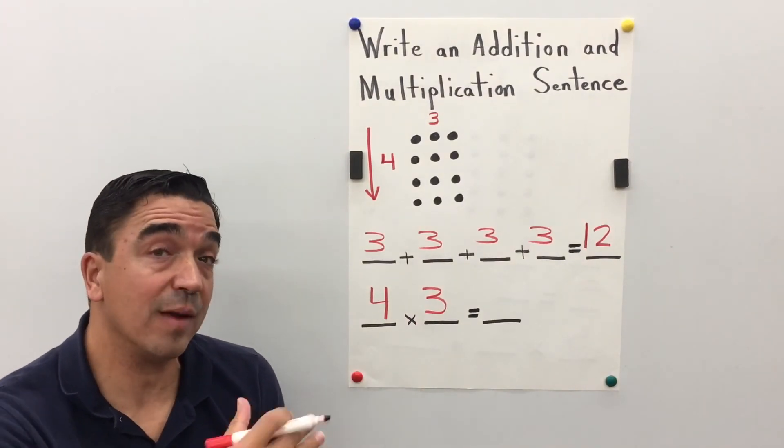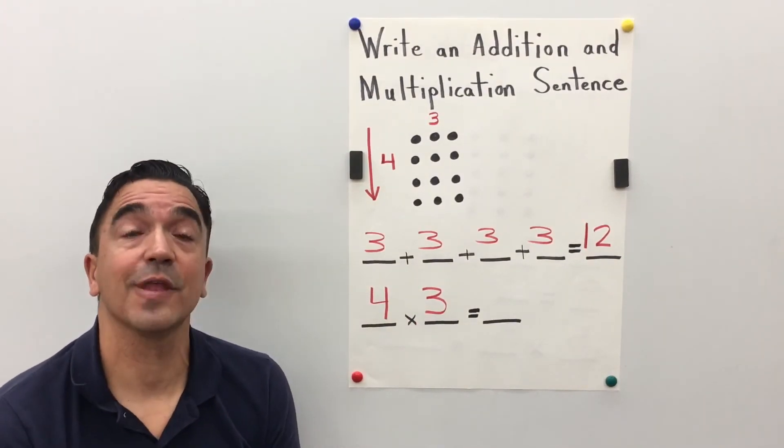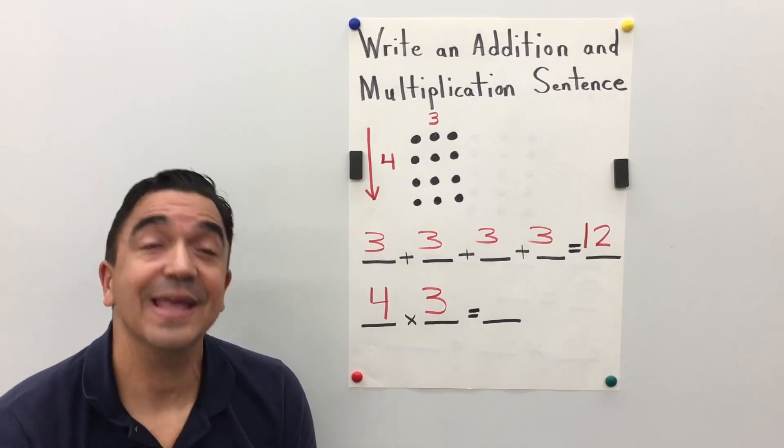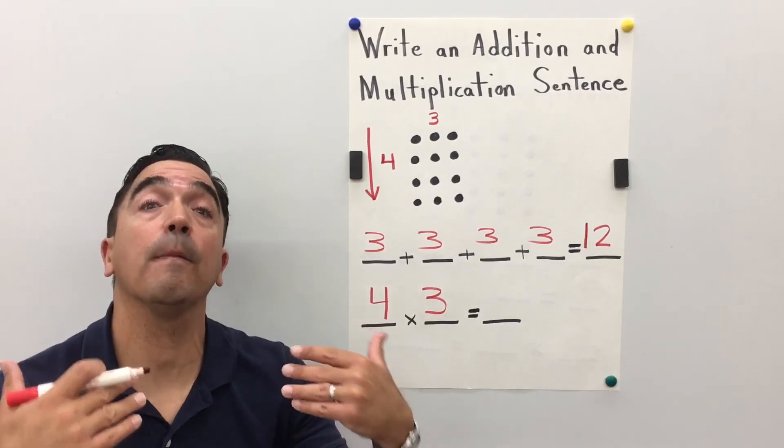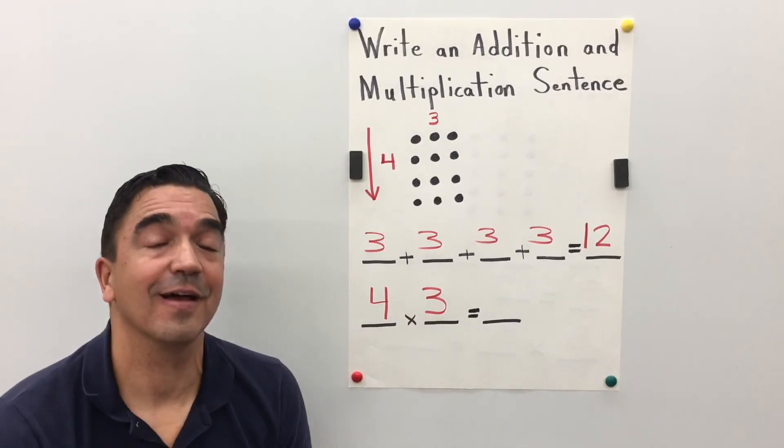Four times three. Four times three equals a product of twelve.